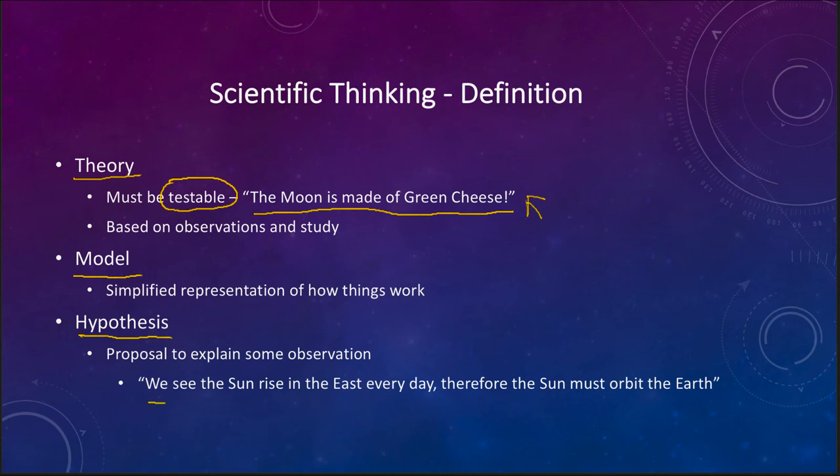A hypothesis again is a proposal that we'll give to explain some observation that we see. So an example here is we see the observation, something that we don't debate, is that the sun rises in the east every day. What is open to interpretation is why that occurs. This is the observation that we see and this is the possible explanation. Why does it occur?